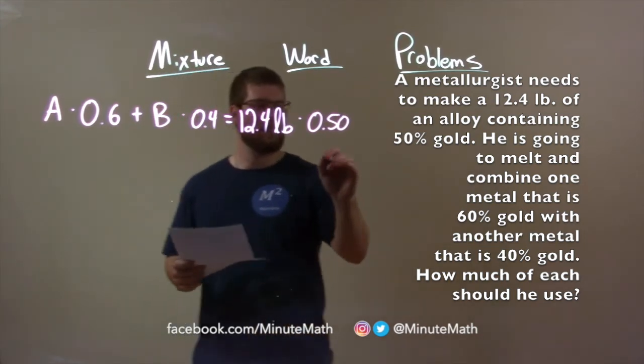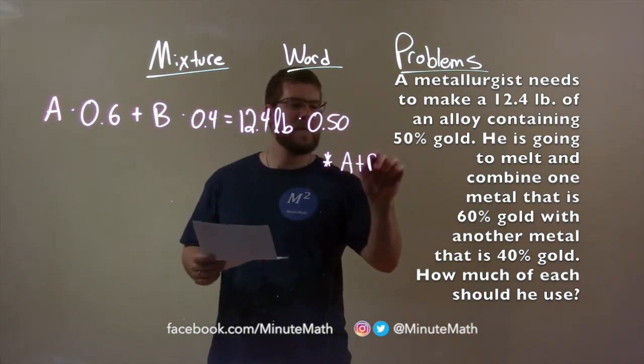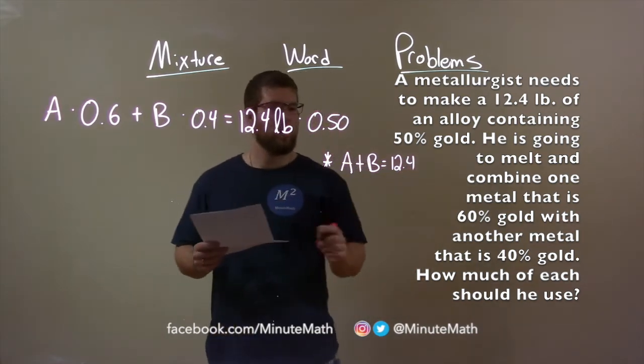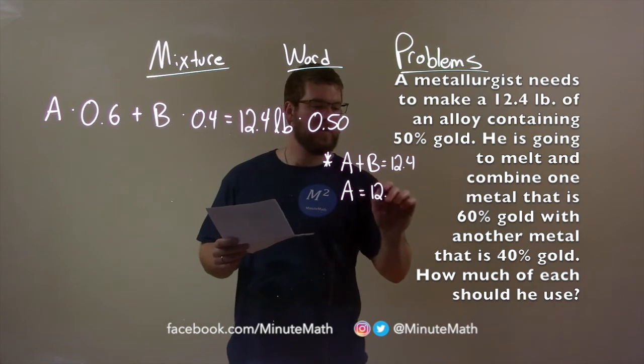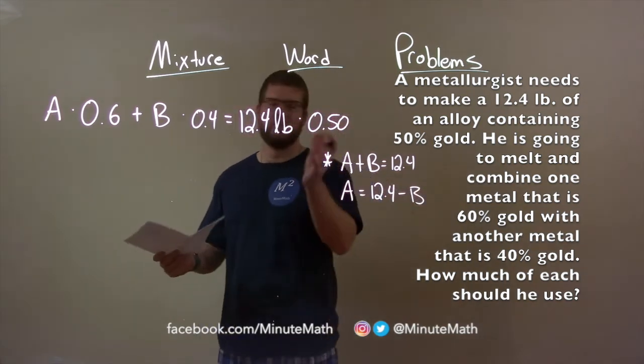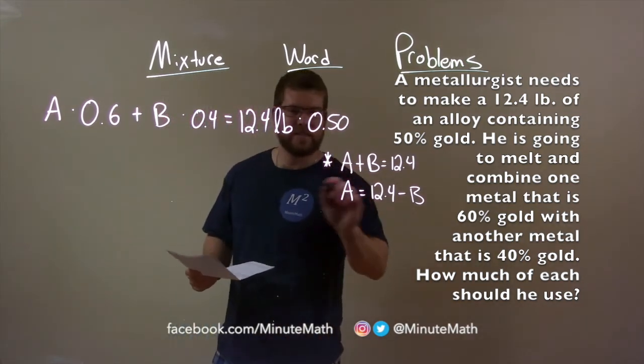So, a little side note here. Make a little note to myself here. We know that A plus B equals 12.4. So, if I subtract B from both sides, that means A is just 12.4 pounds minus B, whatever the pounds of B metal is. That's going to help us. We're going to need this coming through.